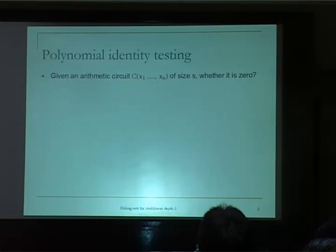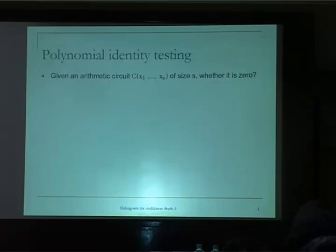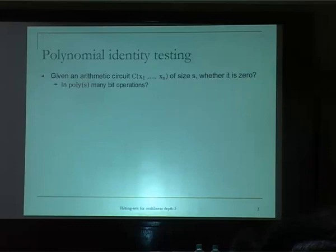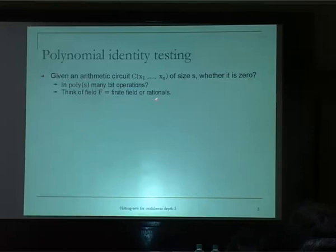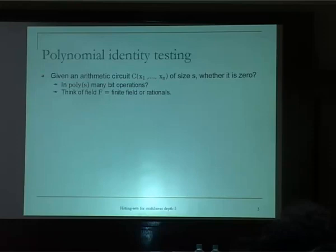The PIT question is: given an arithmetic circuit of size s in n variables, whether it is zero — formally as a polynomial in the polynomial ring, whether it is zero or not. This can trivially be done in exponential time, but the goal is to do anything better than that, ideally in polynomial bit operations. By bit operations, I mean you should think of the underlying field — say a finite field or the field of rationals — where every field element has a bit representation, and in that representation it should be polynomial time.